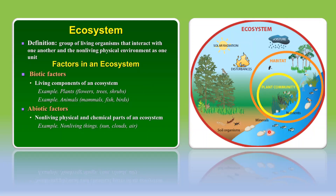Energy flows through the biosphere via a network called the ecosystem, functioning through the physical and organic environment. We can see clearly how biotic organisms, or living organisms, are dependent on abiotic factors. Plants are primary producers on which herbivores depend; herbivores are then consumed by carnivores. Ultimately, when plants, herbivores, and carnivores die, they are decomposed by fungi, bacteria, and worms, and this is how energy keeps on recycling throughout the biosphere.